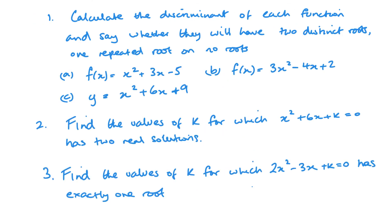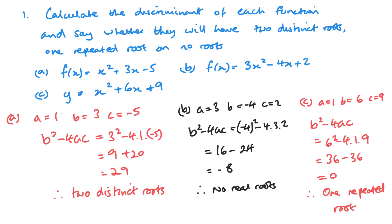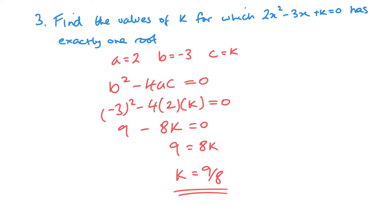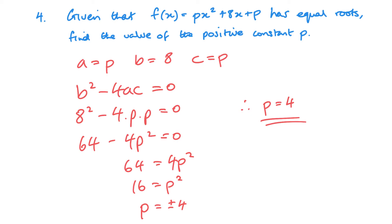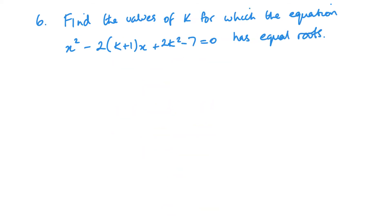Time for you to try a few. Okay, let's go through this one kind of together. So you've got a constant up there. So you've got A equals 1, B equals negative 2K plus 1, and C equals 2K squared minus 7. So it's just remembering value in front of X squared, value in front of X, and constant. So coefficients and constant.